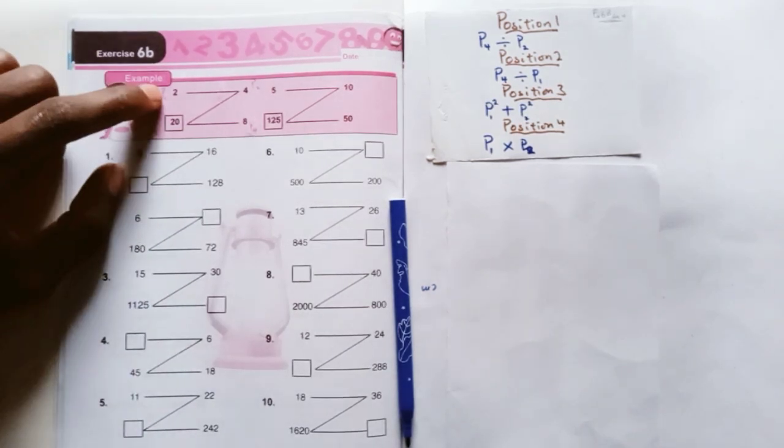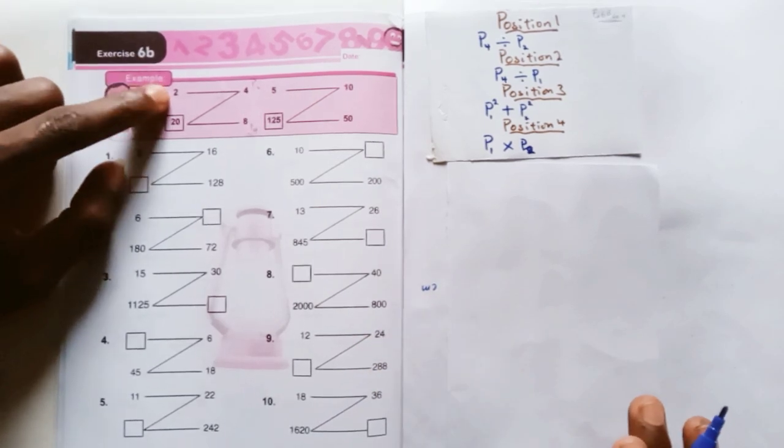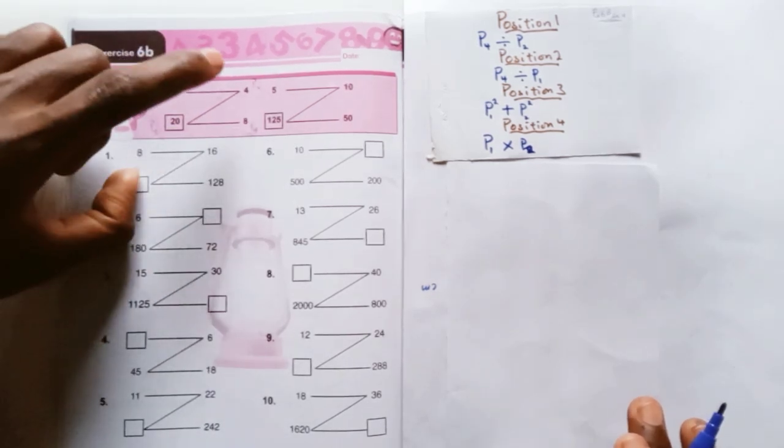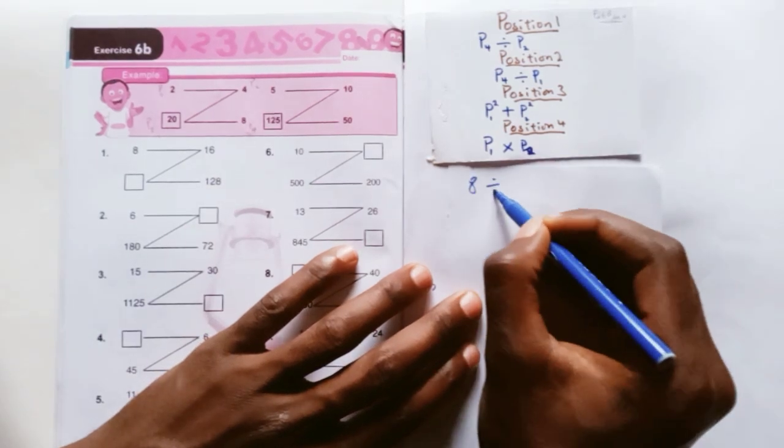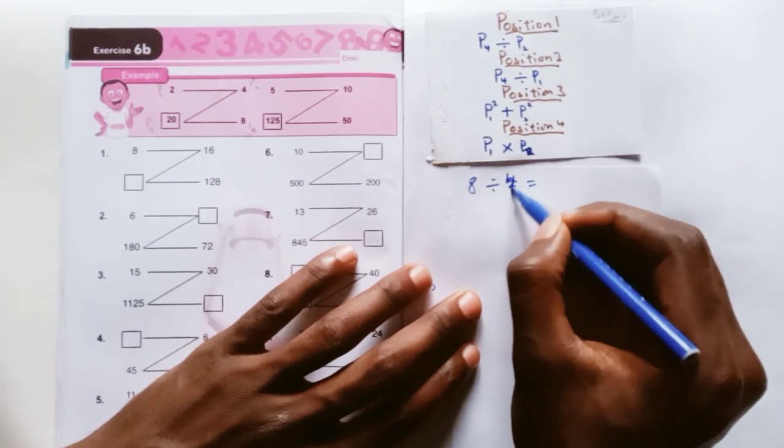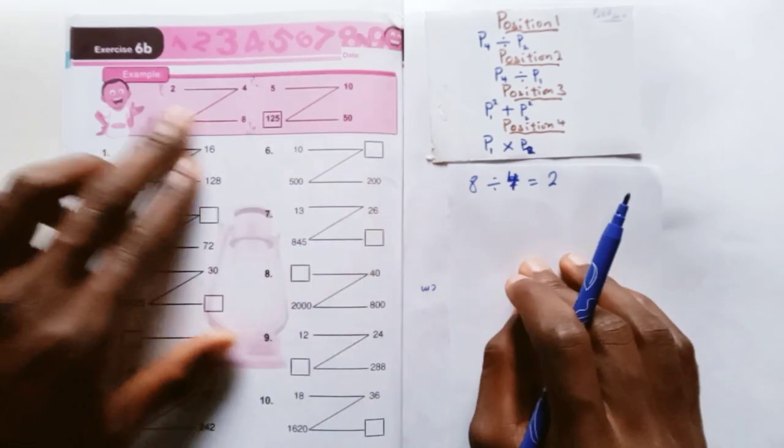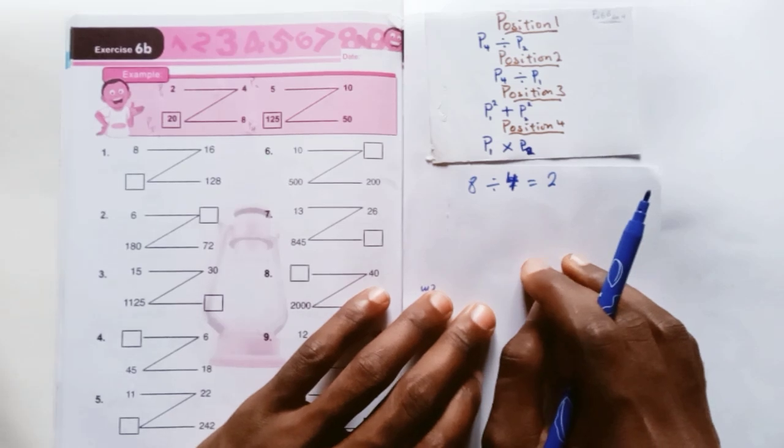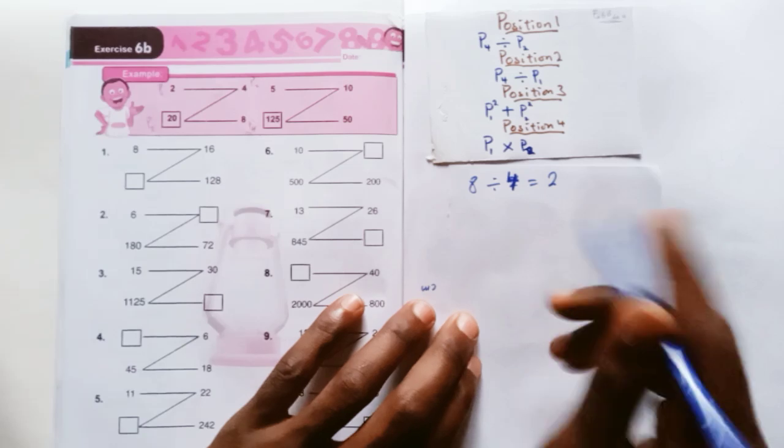For position 1, let's see the example. In order to get the 2 in position 1, we're going to say P4, that's 8, divided by P2. So 8 divided by 4, which is 2. So 8 divided by 4 will give us a 2 in position 1. Same thing here, 50 divided by 10 is 5. So that's the first one.